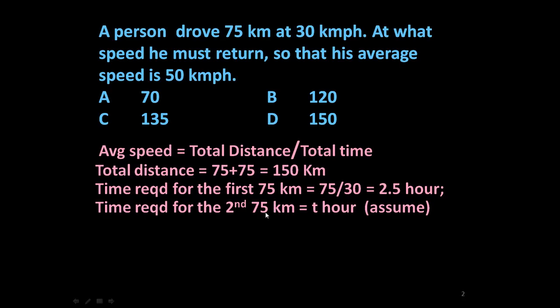Time required for the second 75 km we don't know, so let us assume it is T hours. So total time of journey is 2.5 plus T hours.